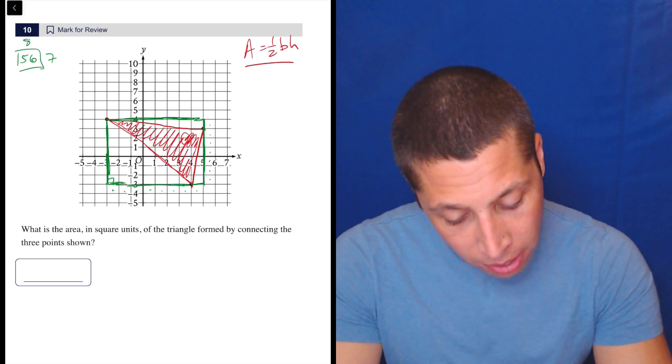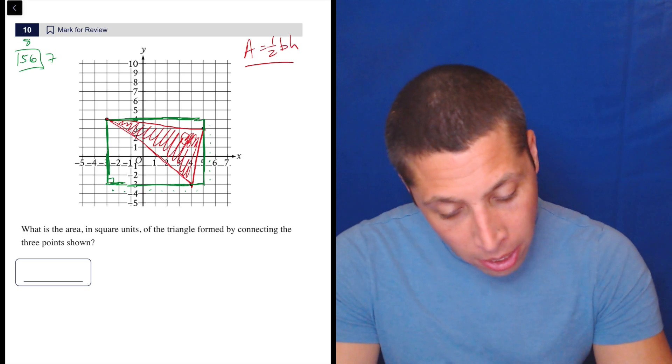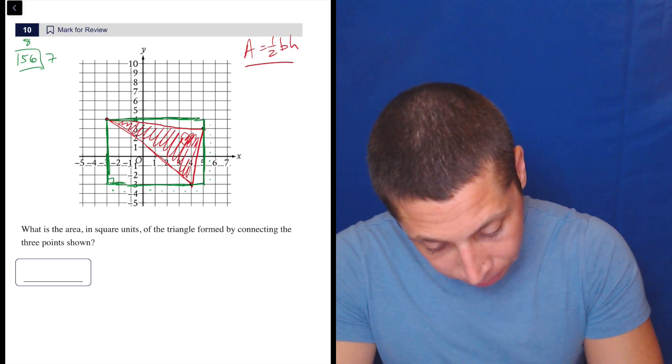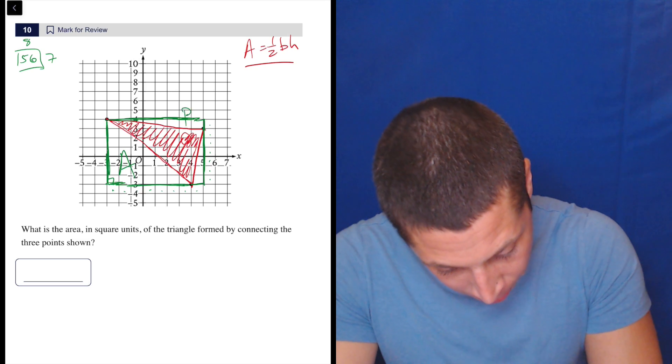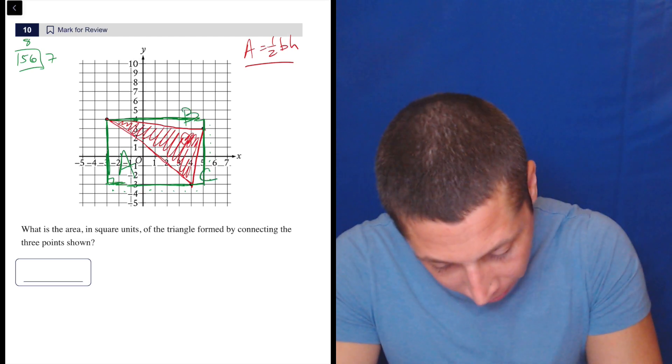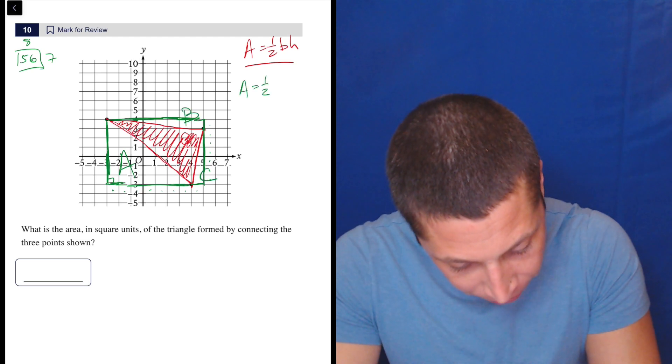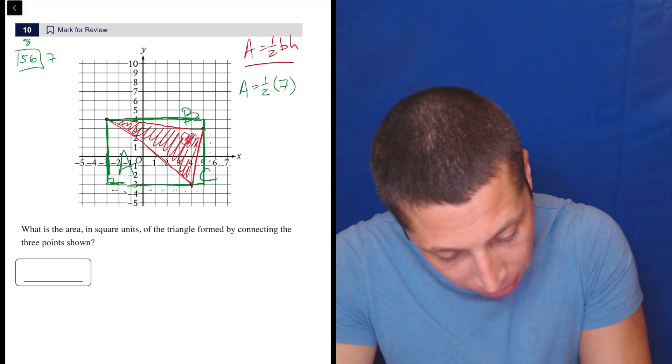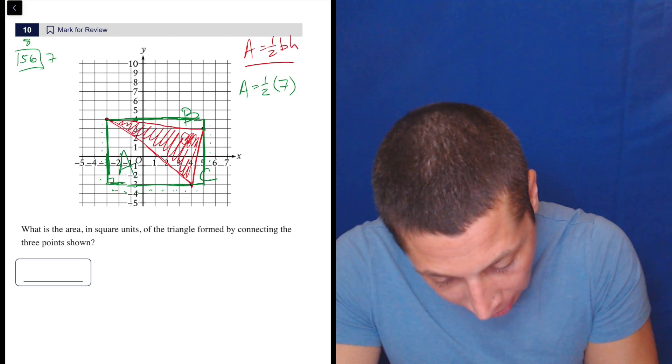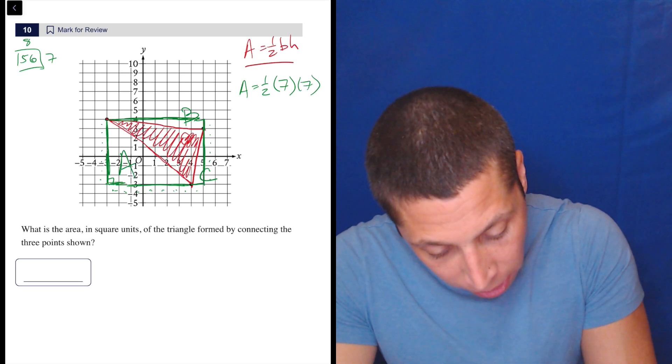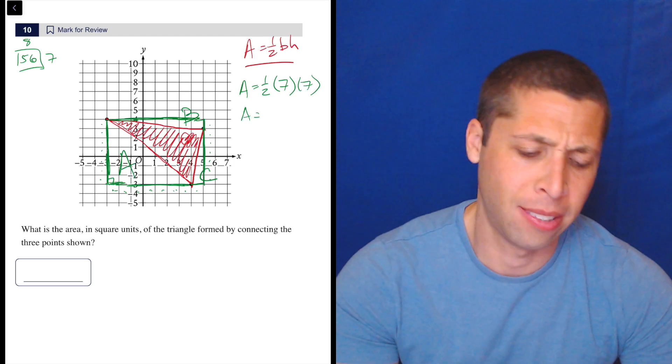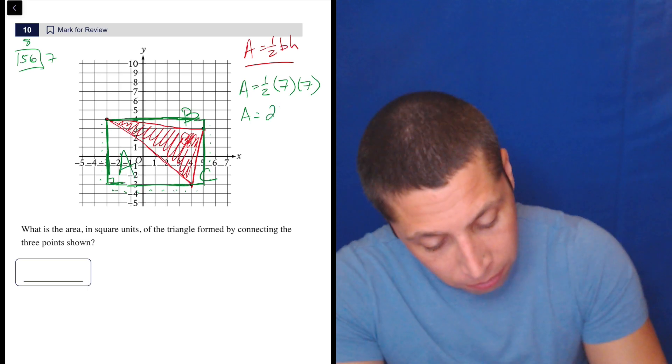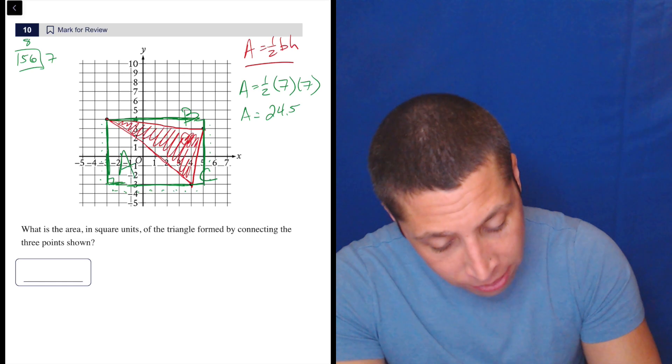We're going to then deal with the triangles by subtracting them out. So let's do triangle A, B, and C. So triangle A, area of A is one half base times height. So the base is one, two, three, four, five, six, seven. I'm literally just counting boxes here. One, two, three, four, five, six, seven high. So half of 49 is 24.5, something annoying. 49 divided by two is 24.5. So that's A.